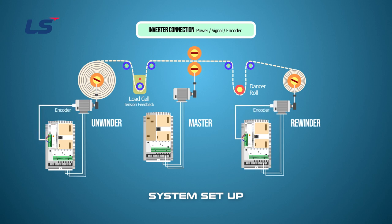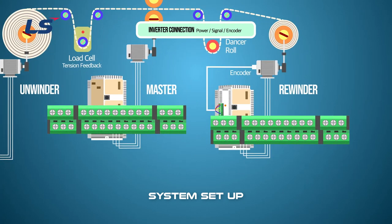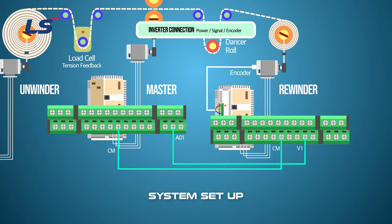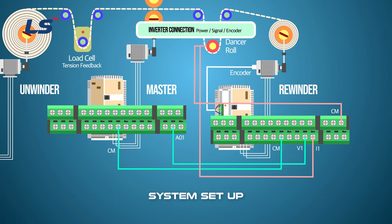The master controls the entire line speed. Connect the master's output frequency value to the speed command input on the rewinder side to match the speed synchronization between the master and the rewinder. In order to keep the tension of the rewinder constant, it is wired so that tension feedback can be received from the dancer or load cell.